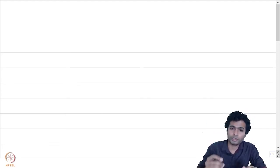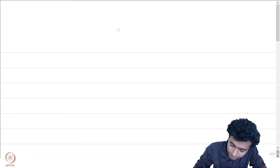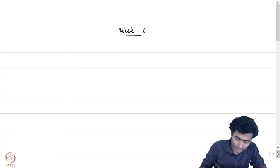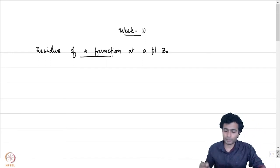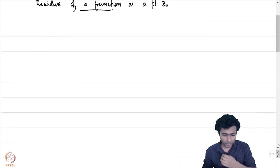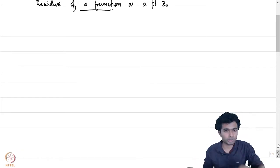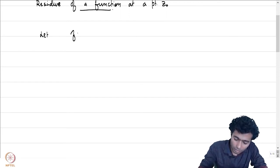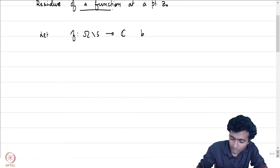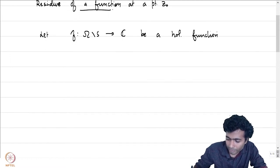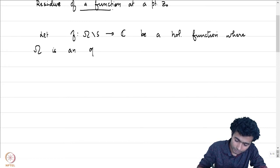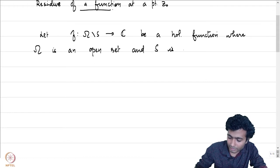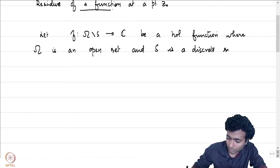Let me begin by defining the residue of a function at a point z_0. We start with the definition of a residue at a singularity — the residue will only be interesting at singularities, and in fact at non-removable singularities to be more precise. We have f from omega minus S into C, the holomorphic function, where omega is an open set and S is a discrete subset of omega.